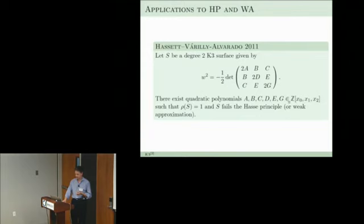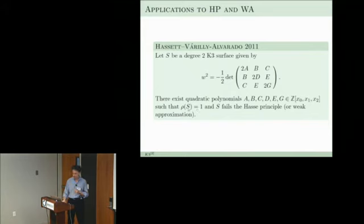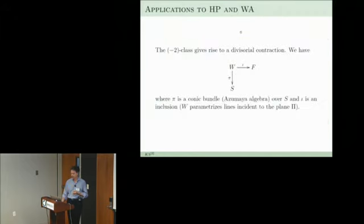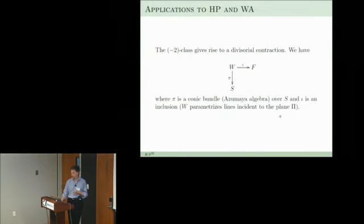How is this used? Brendan and Tony Várilly-Alvarado looked at a specific example — a degree-2 K3 defined by degree-6 polynomials — and implemented this: they explicitly produced the conic bundle over the K3 using this construction. They picked coefficients, showed the corresponding K3 had Picard rank 1, and obtained examples of failure of the Hasse principle and also of weak approximation.